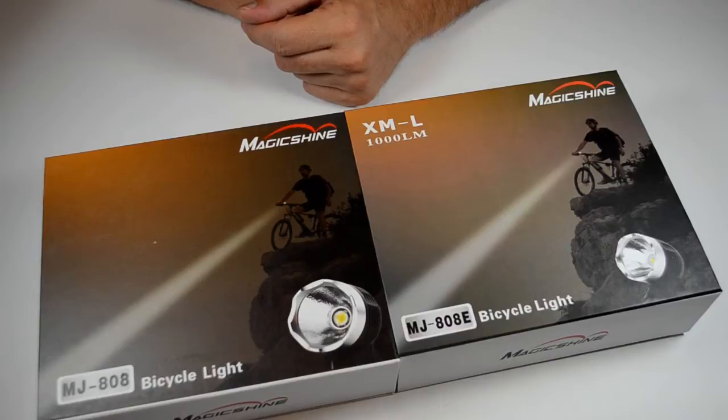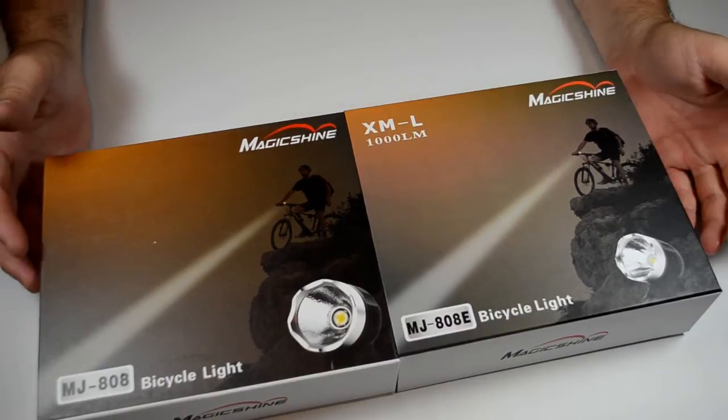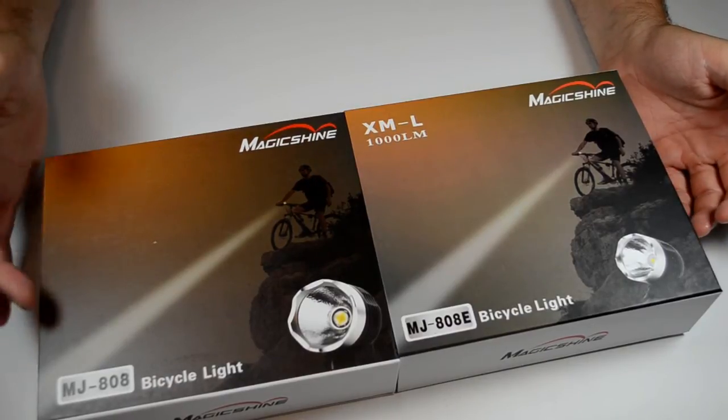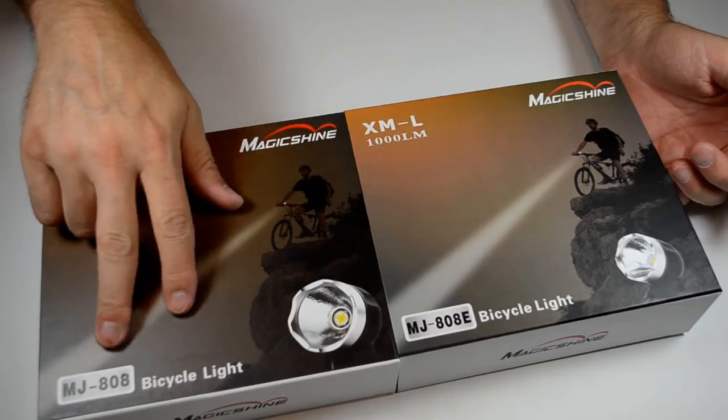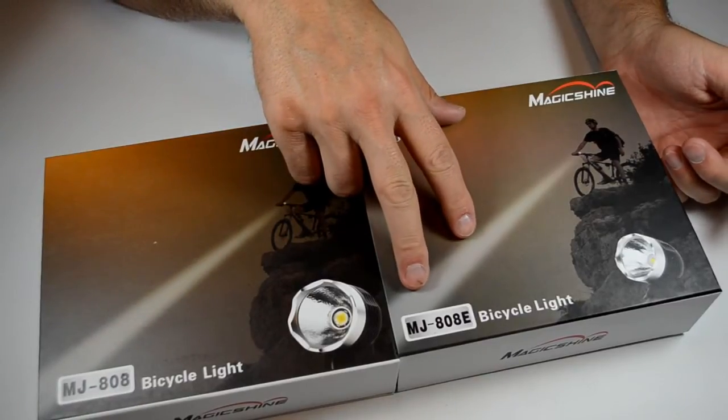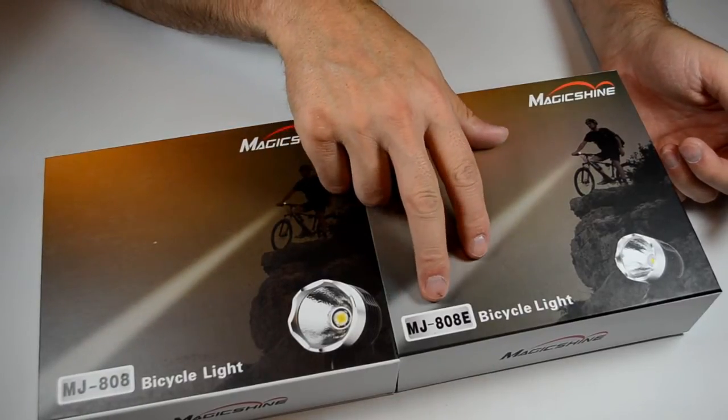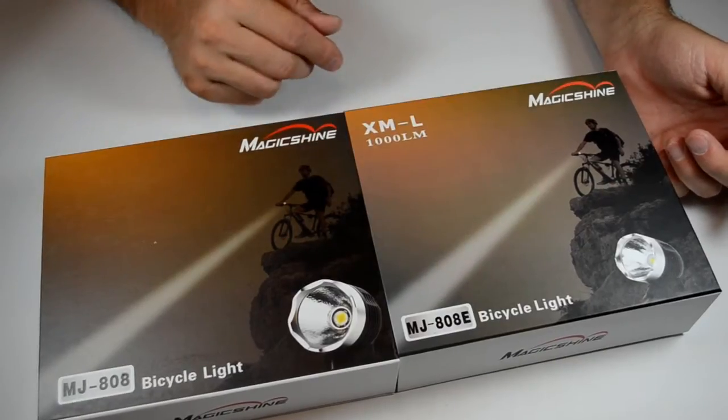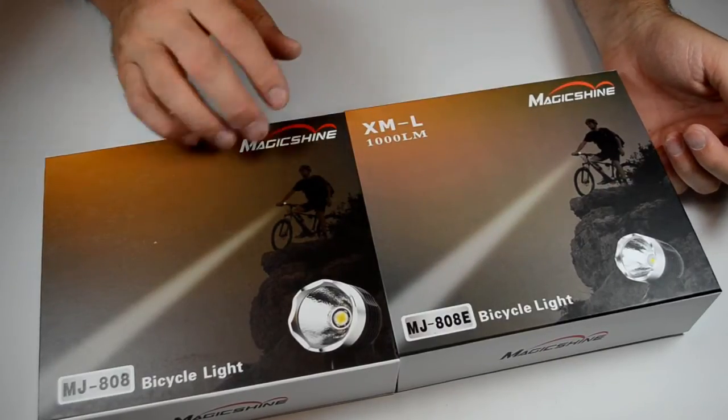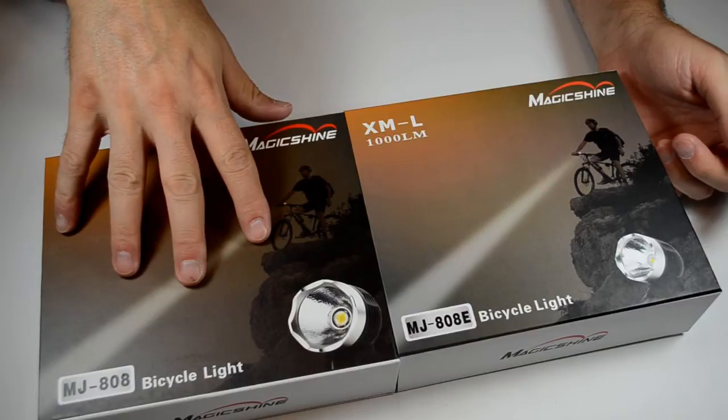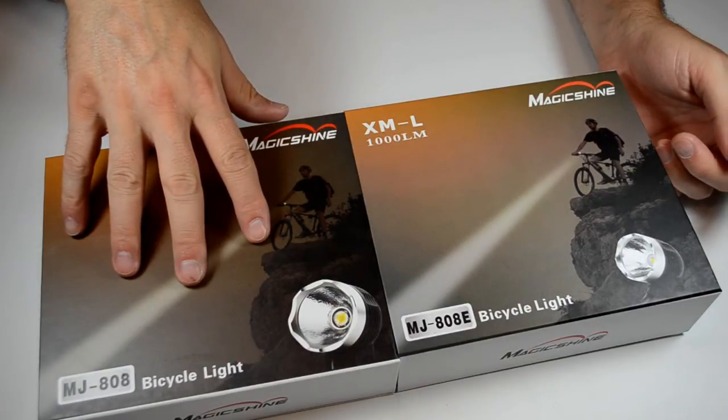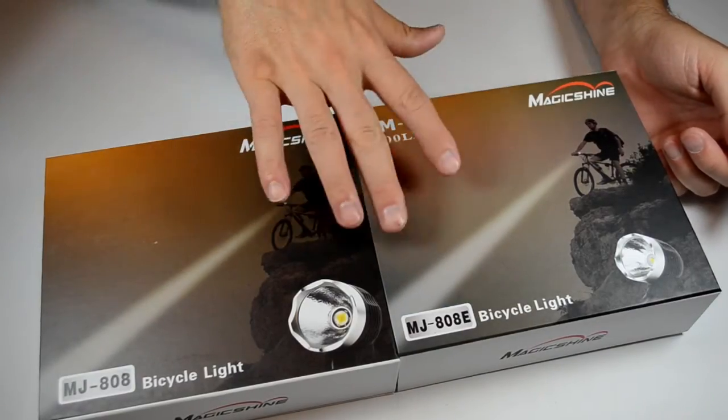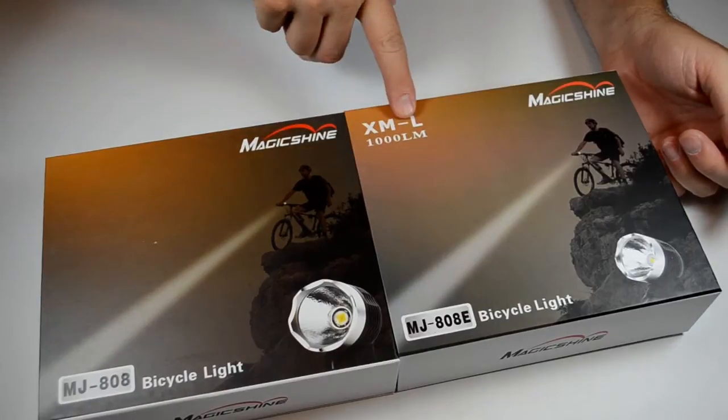Here are a couple of the other Magic Shine bike light offerings. This is the MJ-808 bicycle light and the newer version, the MJ-808E. The difference between the two is the 808 original has the P7 LED in it and the newer version has the XML.